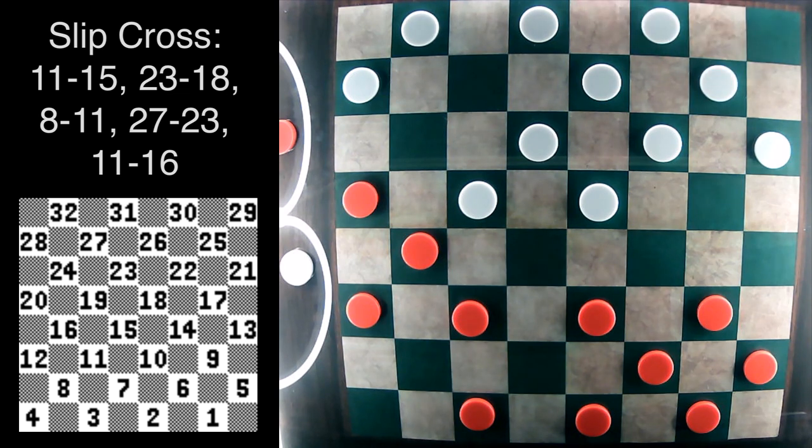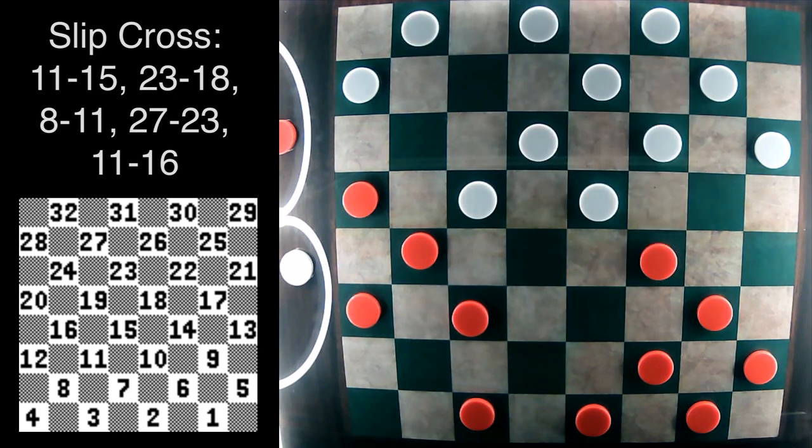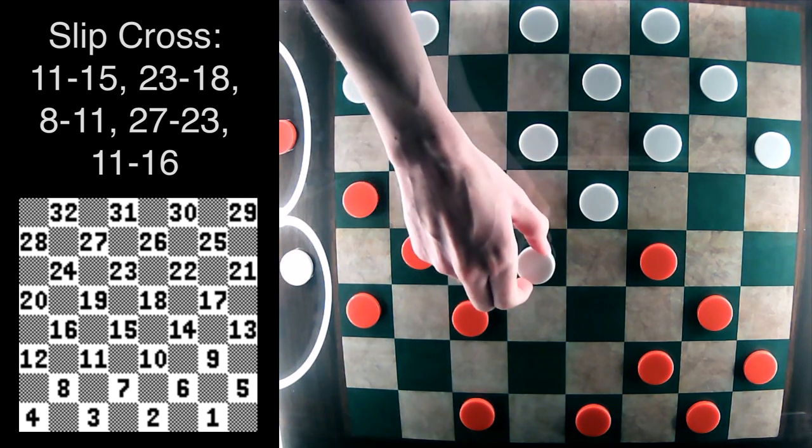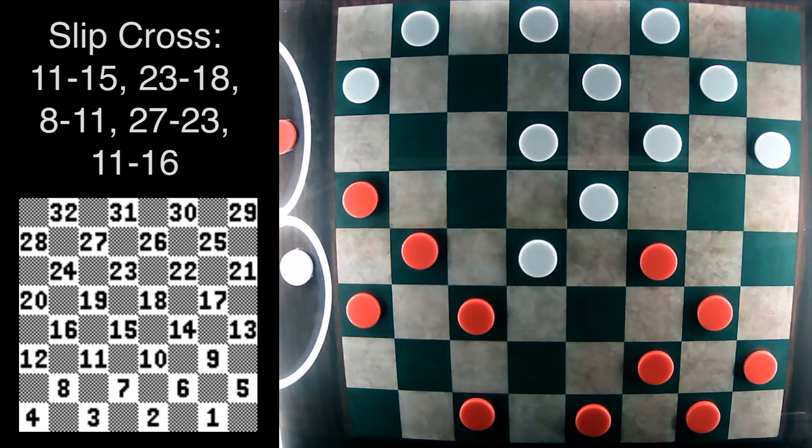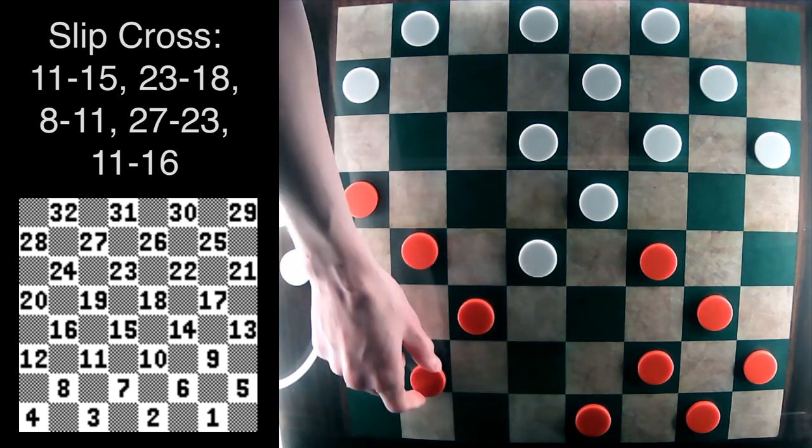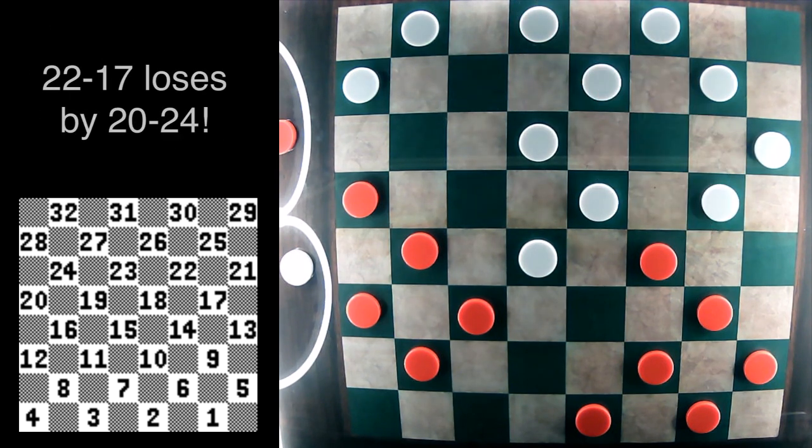And now red is going to flank with this 10-14 and also setting up a little bit of a trap here. White is going to attack the vulnerable piece on 11 by going 19-15. And red goes 3-8 in the hopes that white is going to fall into a trap by going 20-17 next, which will lose